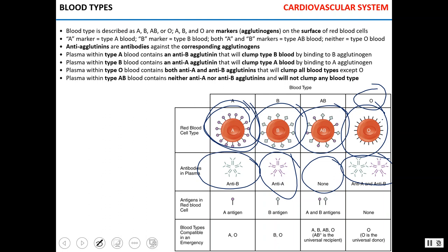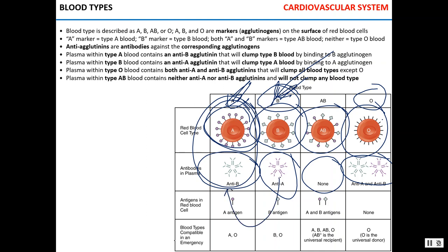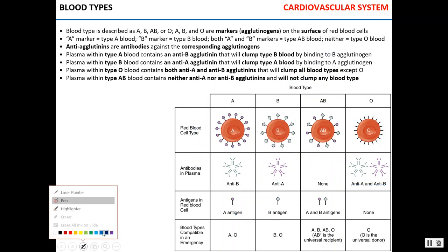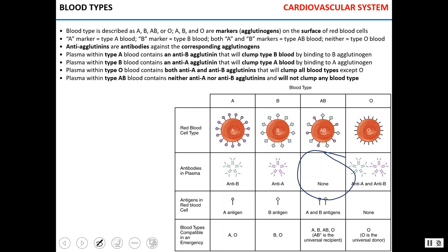If you mix type A plasma with type B cells, the type B blood will clump. If you mix type B plasma with type A red blood cells, they will clump due to anti-A antibodies. AB plasma has no antibodies and will not clump any blood type — this is why AB is the universal recipient. Red blood cells from type O have no antigens so they will never clump with any plasma — this is why O is the universal donor. However, type O individuals can only receive type O blood.